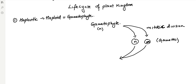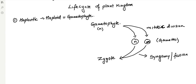I am drawing a very basic life cycle here. When dealing with different groups of the plant kingdom, different structures will come up. These gametes will fuse with each other, leading to the formation of a zygote. This process is known as syngamy, or in other terms, fusion or fertilization. So we will have syngamy, fusion, or fertilization, and what we get is a zygote. This zygote is diploid in nature, while the main plant body is haploid.